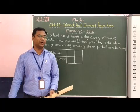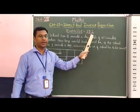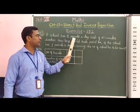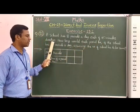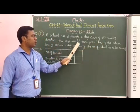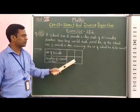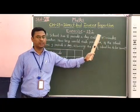Good morning students, in this video we are going to solve question number 11 of exercise 13.2. The question is: a school has 8 periods a day, each of 45 minutes duration. How long would each period be if the school has 9 periods a day, assuming the number of school hours to be the same?